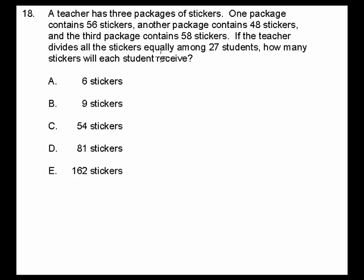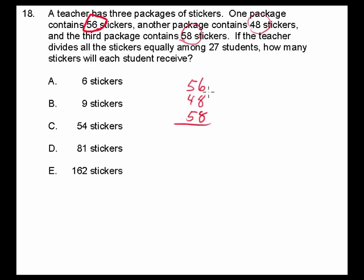This is about as basic of a question as you can get. Obviously, we're going to add these numbers together, and then we're going to simply divide by 27. So you have three packages of stickers, and these packages all contain different numbers of stickers, and we want to divide these stickers equally among 27 students.